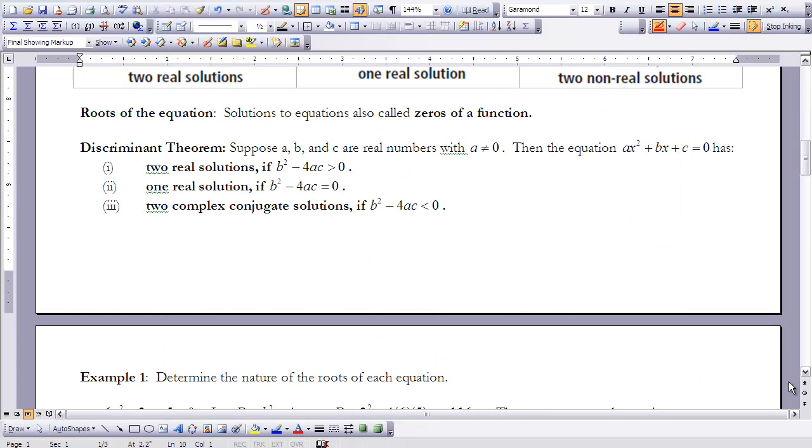I want to look at something called the roots of equations. When you see the roots of an equation, you can also think of that as solutions to your equations, and it's also going to be called zeros of your function. All three of those will be interchanged. And we use a discriminant theorem to kind of organize the information that we've found above in those three different scenarios with the graphs.